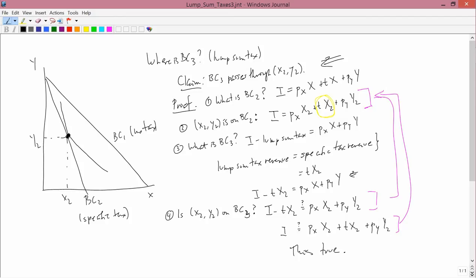And therefore, the answer to the question I ask in step four is yes, and therefore, the claim is proven that BC3 passes through X2, Y2. So I've proven the claim, and what I'll do next is draw a much more careful graph than I've done so far, and show what the implications of the claim are. So I'll see you next time. Thank you.